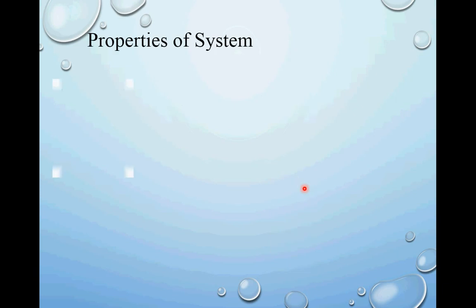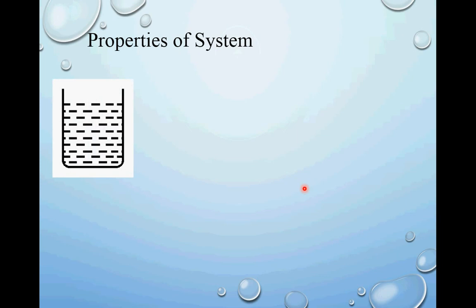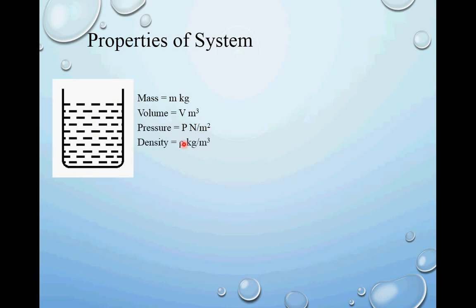Now, properties of a system. To understand various properties, consider an open container with a certain amount of water, open to atmosphere so atmospheric pressure acts on the water surface. We define: mass as m kg, volume as v cubic meters, pressure as p Newton per meter squared (Pascal), density as rho kg per cubic meter, temperature as t degrees Celsius, and weight as w Newton.